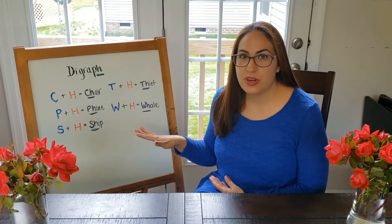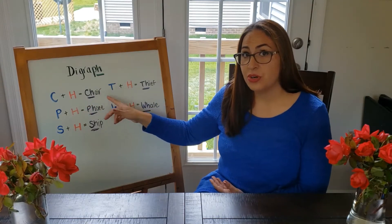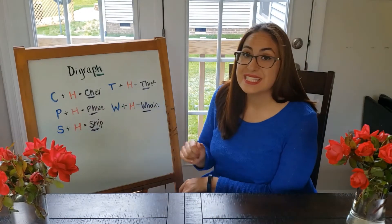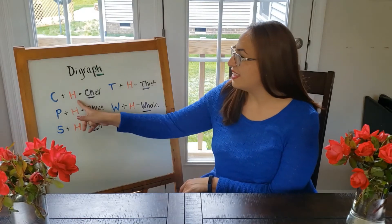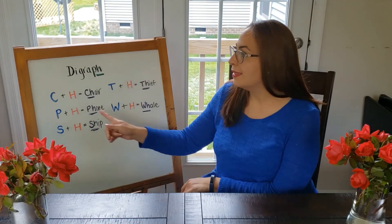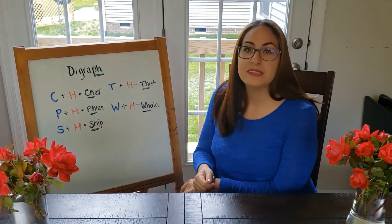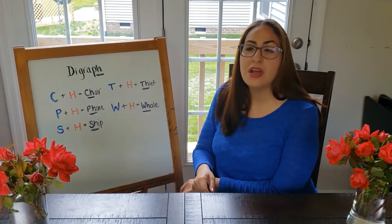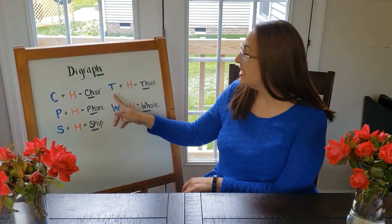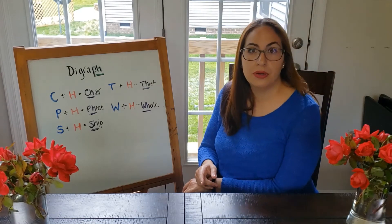Okay families, before we get started with our game let's talk about digraphs. A digraph is a combination of letters that, when put together in a word, make a new sound different from their original individual sounds. For example, the letter C makes one sound and H makes another, but together they make the 'ch' sound like in 'chair.' The letter P and H together make the 'f' sound like in 'phone.' SH makes the 'sh' sound like 'ship,' TH makes the sound like in 'thief,' and WH makes the sound like in 'whale.'